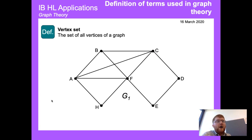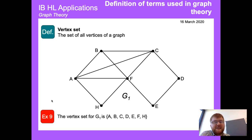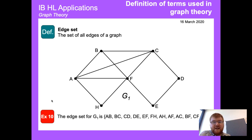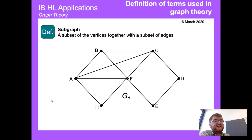A vertex set is simply the set of all vertices on a graph. Using set notation with curly brackets, the vertex set would be {A, B, C, D, E, F, H}. Similarly, an edge set is the set of all edges on a graph — so we write A-B, B-C, C-D, and so on, making sure to include every single edge. Don't forget edges like A-C going across.